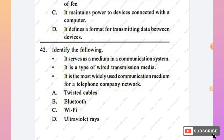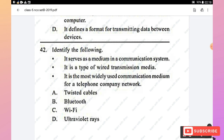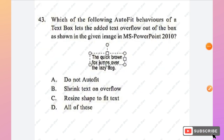Question 42: Identify this communication medium — it serves as a wire transmission medium and is the most widely used for telephone company networks. The options are twisted cables, Bluetooth, Wi-Fi, and ultraviolet rays. Option A, twisted cables (twisted pair), is the right answer.